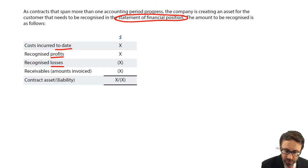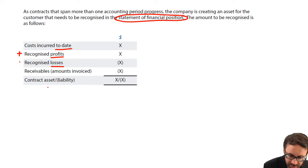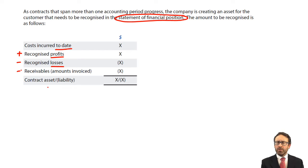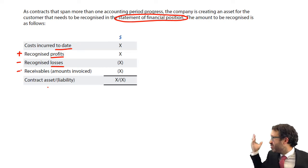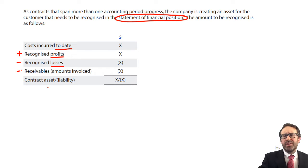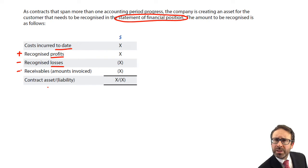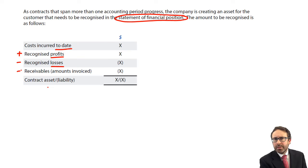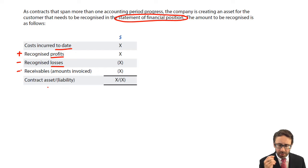So to remember the pro forma: you start with your costs to date, add on any profits to date, deduct any losses, and deduct any receivables. That's it — it's a pro forma that you just need to learn, and if you can learn it you're going to be in a good position in the exam. Let's go back and have a look at the questions we've seen so far before we do the new example in the notes.